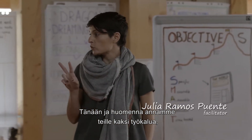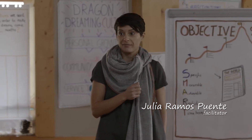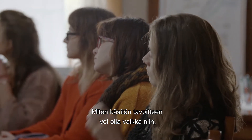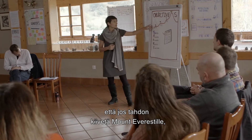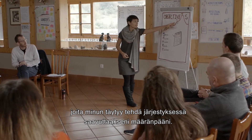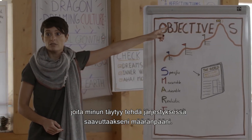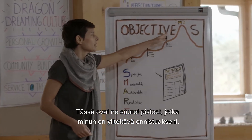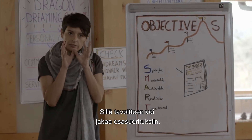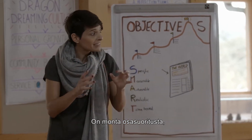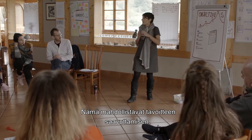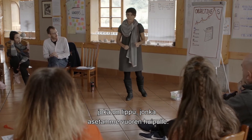Today and tomorrow we're going to give you two tools to help you in the planning. The first one is what we call objective setting. An objective — for example, if I want to climb Everest — the objectives are the important things I'm going to have to do in order to reach my final goal. They are the big stops I need to reach that point. An objective can be broken down into tasks, but there is a main goal behind all the tasks that allows us to achieve that flag we're putting in the mountain.